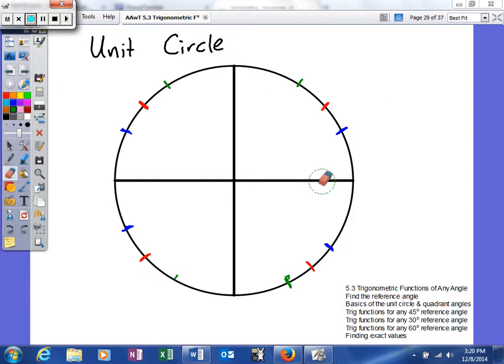Alright, last thing we're going to talk about in the unit circle is 60 degree reference angle. So, we've already talked about our quadrant angles, our 30 degree reference angle, and our 45 degree reference angle, so let's look at 60.